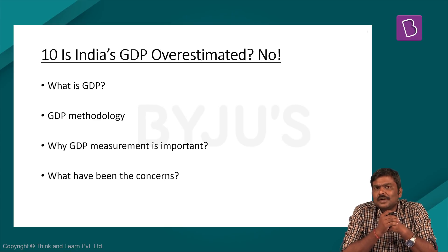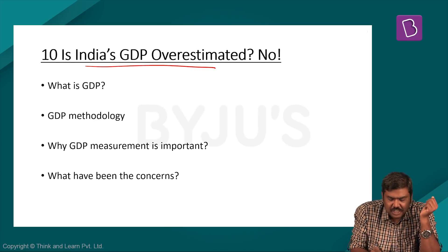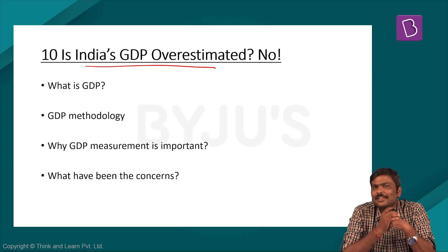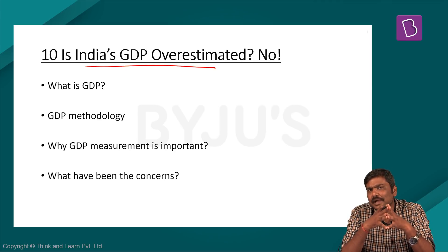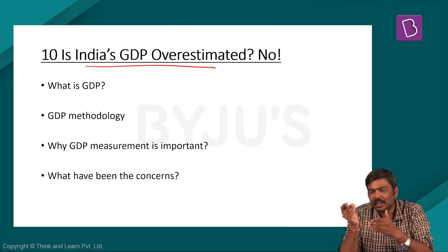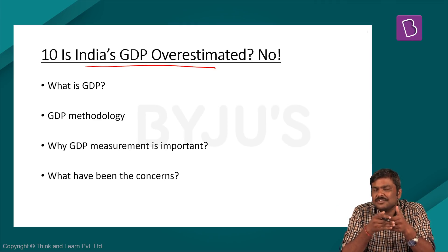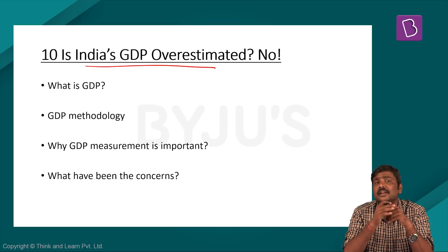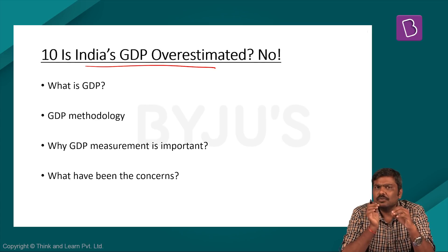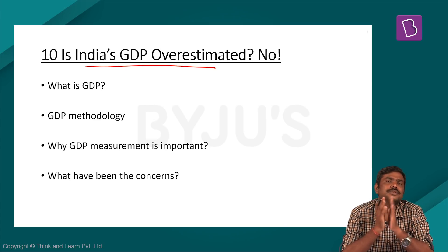Let's start with the 10th chapter, which is on the concept of GDP estimation. In the last couple of years, there has been a lot of discussion related to whether the GDP estimated by the agencies — that is CSO, now NSO — is correct. Before discussing the analysis conducted in the economic survey, let me give you certain very important basic points.